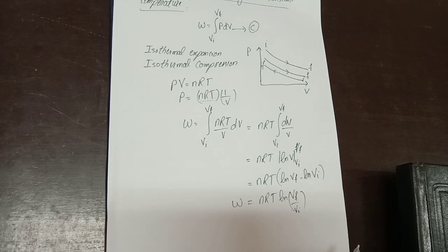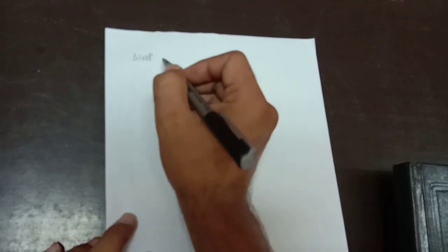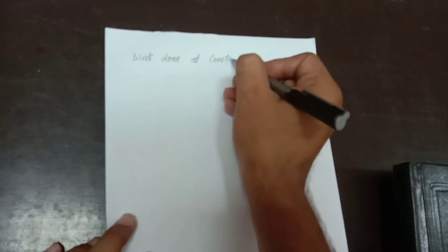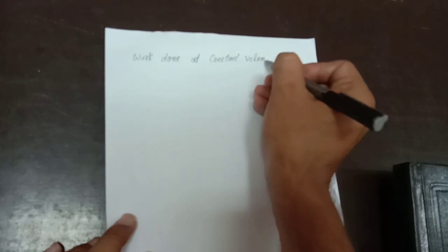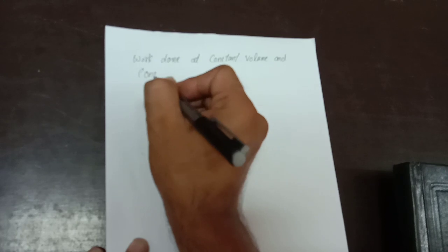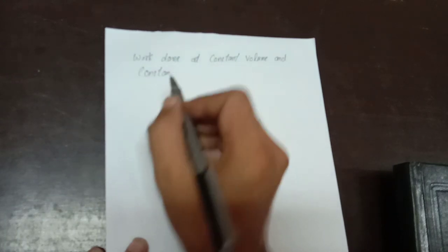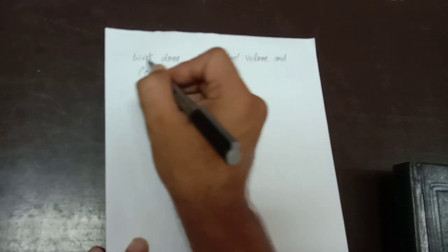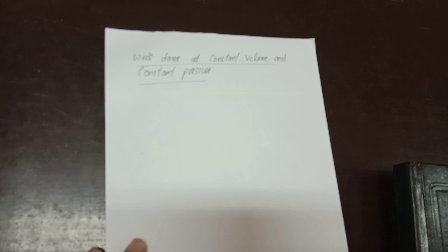The next part of the discussion is work done at constant volume and constant pressure. These are two different cases: work done by an ideal gas at constant volume, and work done by an ideal gas at constant pressure.